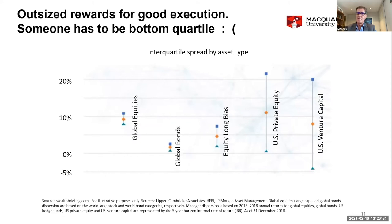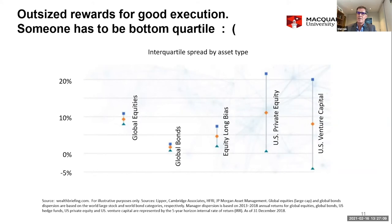There are outsized rewards for good execution. Looking at individual funds — global equities, bonds, long-only hedge funds, and on the right private equity and venture capital — if you do well you can really outperform the median return. A really good global equities fund might have earned about 11–12% in the past. A really good portfolio of private equity and venture capital can be up in the low 20s. The portfolio I managed most recently was up in the mid-20s in returns — that makes a real difference to whether you can make a better life for retirees.